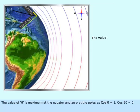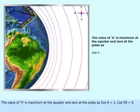The value of H is maximum at the equator and zero at the poles, as cosine 0 equals 1 and cosine 90 equals 0.